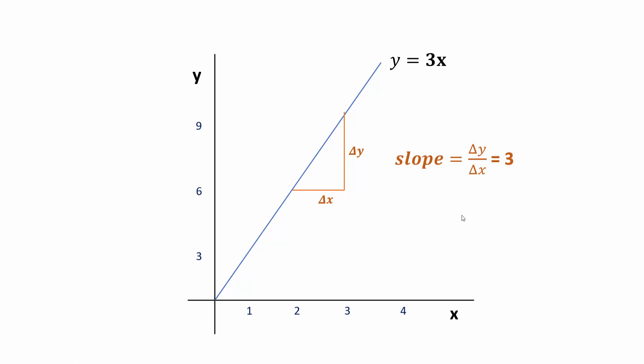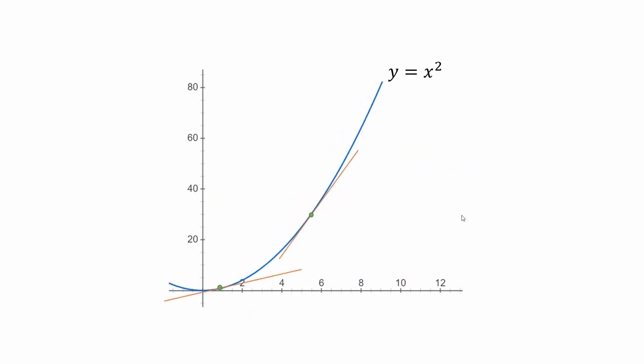It's very simple mathematics, nothing complicated. But when you have a line like this which is not linear, the slope is not constant. Based on what point you are looking at, the slope might vary. So how do you find the slope of this line?